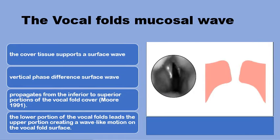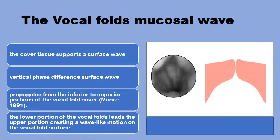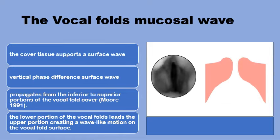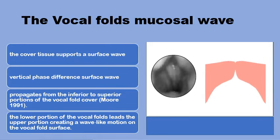We are watching here the surface mucosal wave of the adducted vocal fold bodies. Note that there is a phase difference between the superior and the inferior parts of the vocal fold cover — the medial surface of the vocal cords that meets in the midline — and that the surface wave propagates from inferior to superior. The inferior part of the vocal cords leads not only during the convergence of the vocal cords closer together in the midline, but also during their divergence from the midline as well.